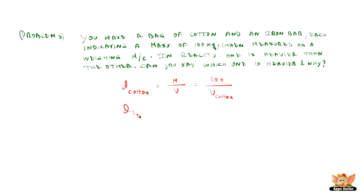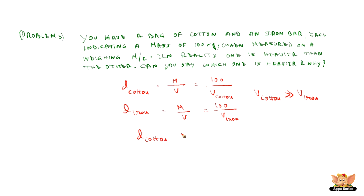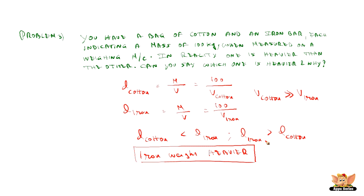Similarly, the density of iron bar is mass divided by volume. Mass of iron is also 100 kg, but the volume of the iron bar is much smaller. Since volume of cotton is much greater than volume of iron, and density is inversely proportional to volume, the density of cotton becomes much smaller than the density of iron. Hence, if the density of iron is greater than the density of cotton, iron weighs heavier. Whenever the density of a substance is greater than another, the substance with higher density weighs heavier.